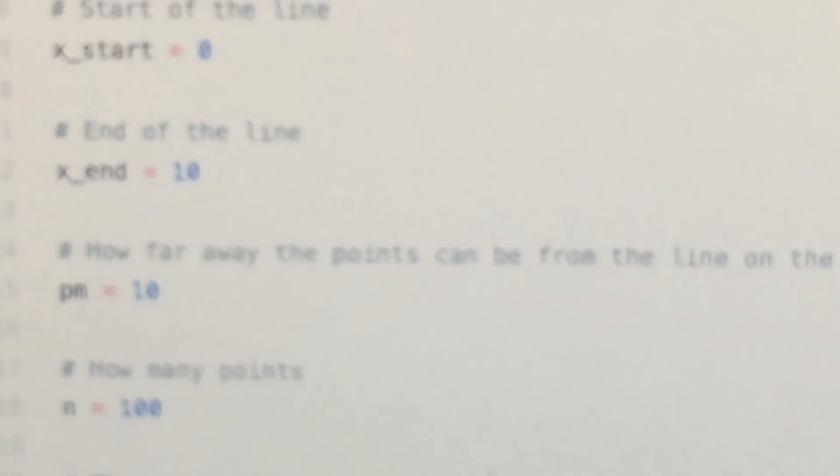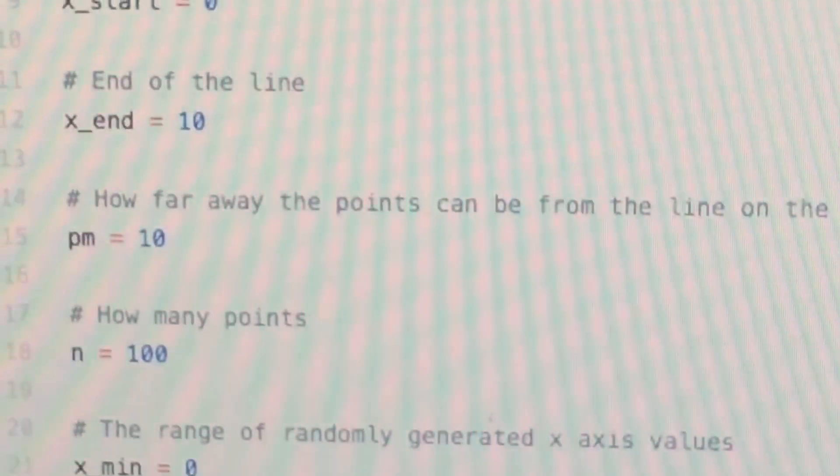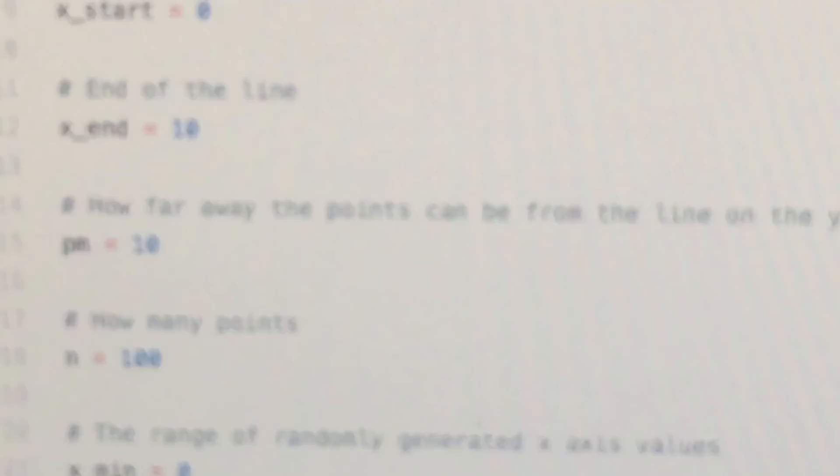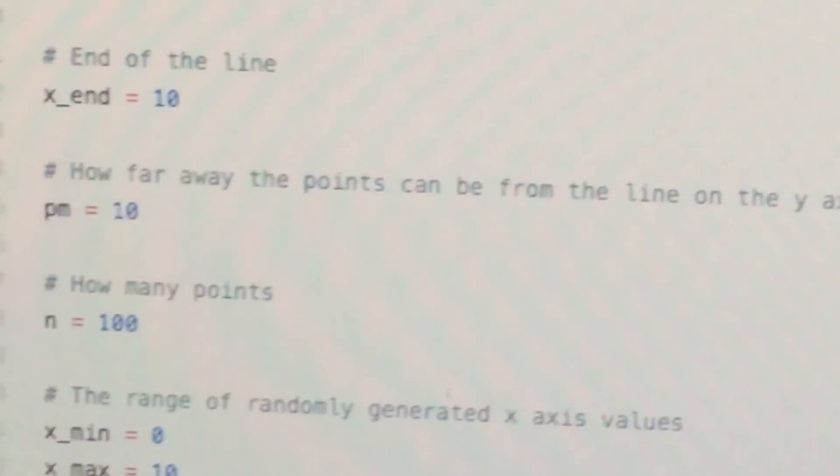And then n is how many points you're gonna create. And this is the range where you can pick on the bottom, so then you go up to pick. You pick it randomly and then you pick random with the plus minus to create a randomly generated point.